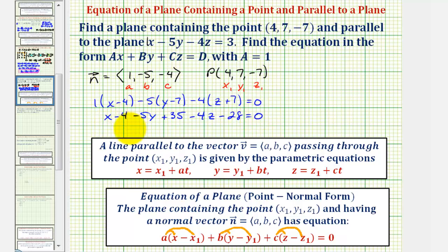So we'd have x - 5y - 4z. Combine the constants: we have -4 + 35, that's 31, minus 28, that would be positive 3. So we have +3 = 0.